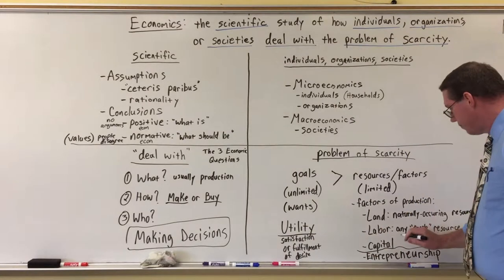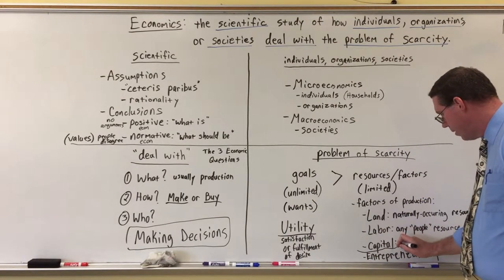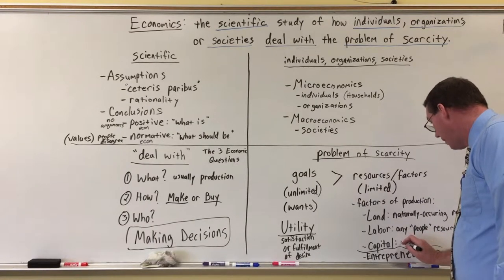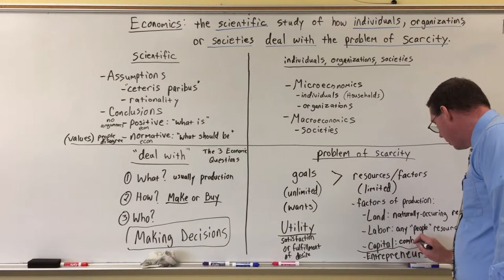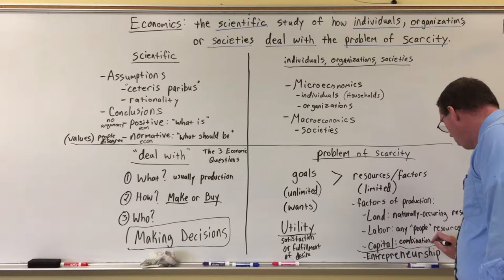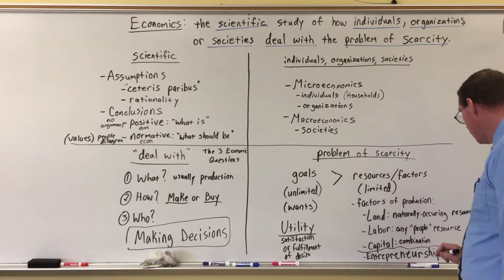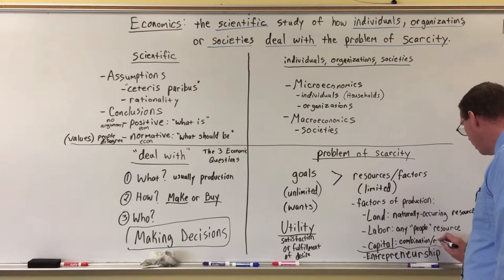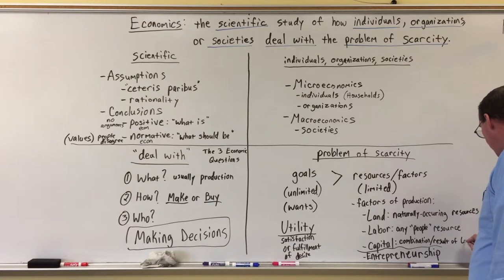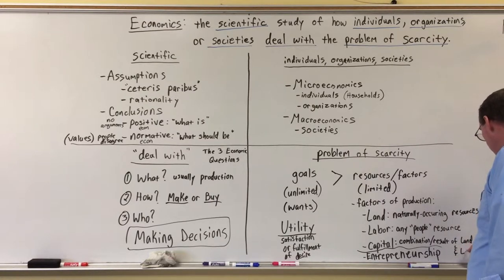The last factor is capital. Capital is the combination, or the result, of land and labor.